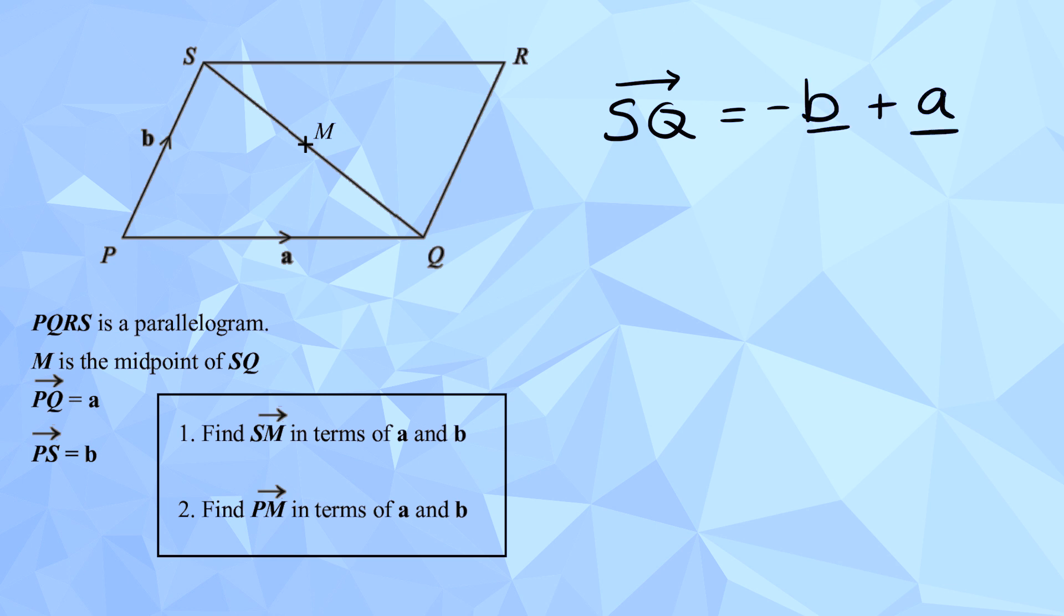Can I pause you there? You're absolutely right. So, to find SM, what you're saying is before we can do that, we've got to work out that vector S to Q. Absolutely right. So, you said that was negative b add a? Yeah. Perfect. I agree with that. Spot on. Good.